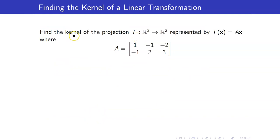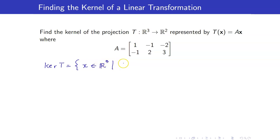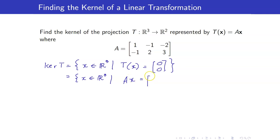Another example: let us find the kernel of a transformation from R3 to R2 where an element X in R3 gets mapped to A times X. By definition, the kernel of T is the collection of all X in R3 such that AX equals the zero vector in R2. But this set — all X such that AX = 0 — is actually the null space of A.